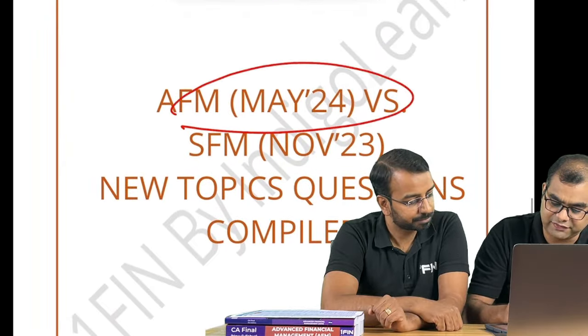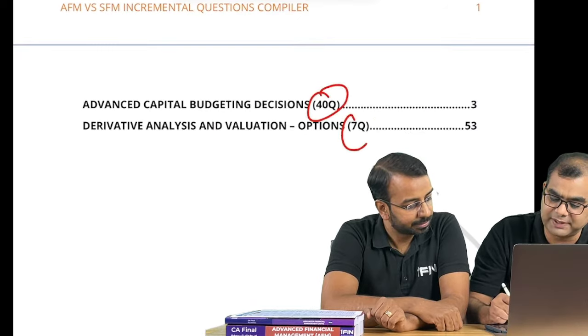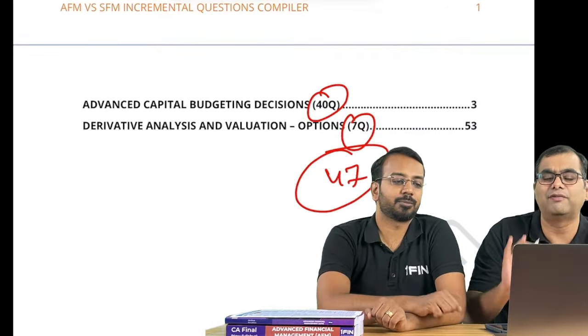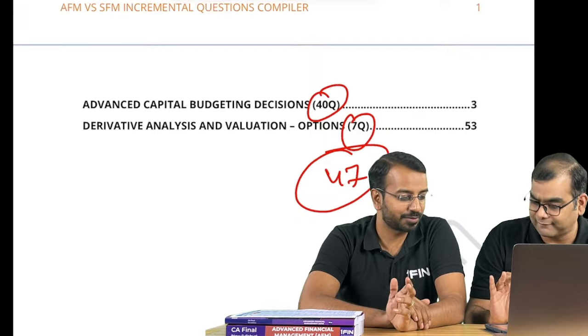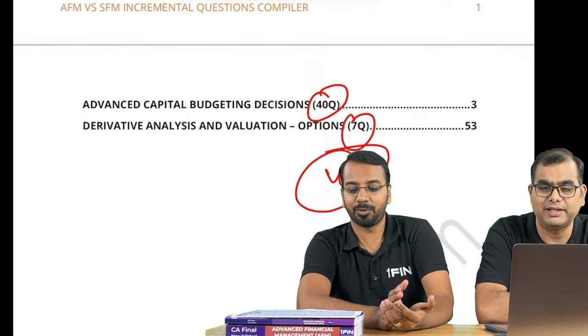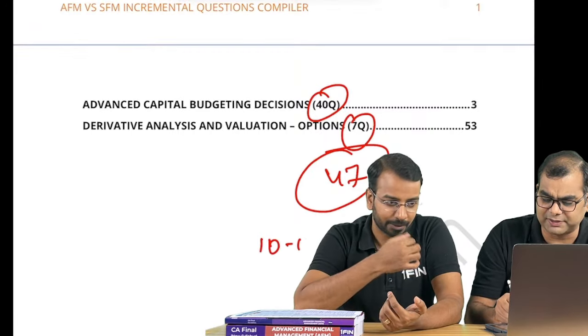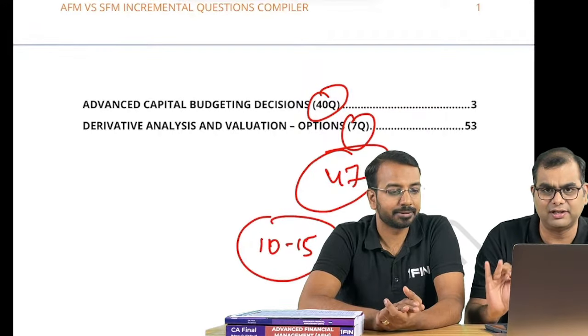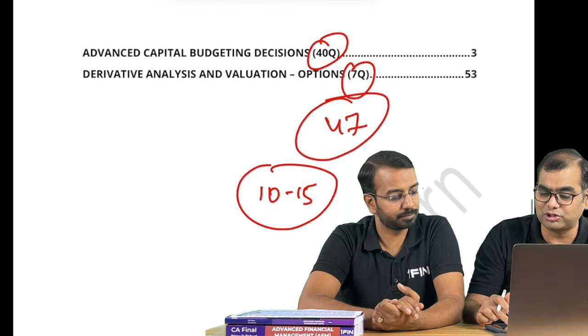In addition to theory, what are the incremental questions that are covered? Basically that advanced capital budgeting and all related topics are given as incremental theory. If you look at AFM versus SFM, what are the practical questions - new questions compiler has 40 plus 7, 47 questions. You have to go through these 47 questions. The change is only 10 to 15 percent if you ask me. Balance 85 percent is still the same.